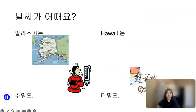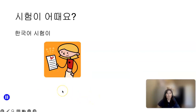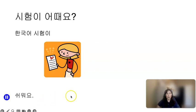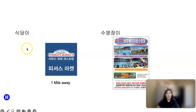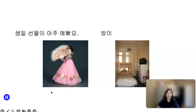Now I want to provide context. 날씨가 어때요? How is the weather? 알래스카는 날씨가 추워요. Hawaii는 어때요? 날씨가 더워요. 시험이 어때요? How is the exam? She got A+, so 쉬워요 — easy. 식당이 어때요? Just a mile away: 가까워요 — it's close. 수영장이 어때요? It's far: 멀어요. 생일 선물이 아주 예뻐요 — the birthday gift is very pretty. 어때요? 고마워요.